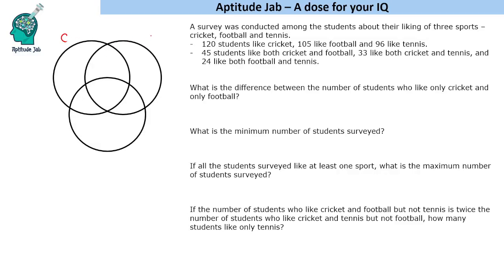Let's say this is cricket, football, and tennis. Cricket is 120, football is 105, and tennis is 96. Now let's fill in the information. 45 students like both cricket and football — that involves the complete overlapping region — so we put 45 there. 33 like both cricket and tennis, so that number is 33. And 24 like both football and tennis, so that region is 24.